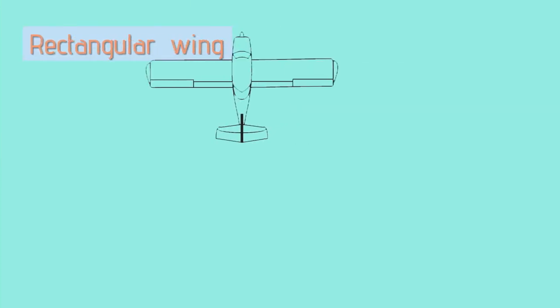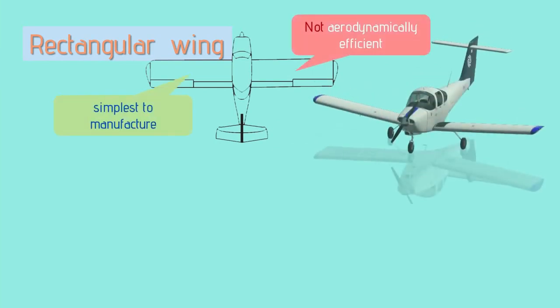Rectangular wing is excellent from a manufacturing point of view. It is a straight and untapered wing, mostly used for small elite general aircraft like Piper 38, but it doesn't provide an aerodynamically efficient one.